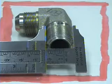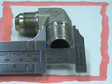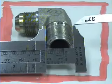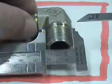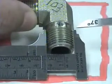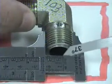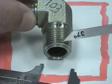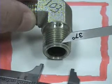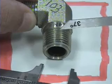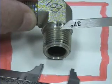Pipe threads are tapered, and with the calipers here we can get an idea that the threads are tapered. By tapered, I mean the diameter here is smaller than the diameter here. Tapered pipe threads.